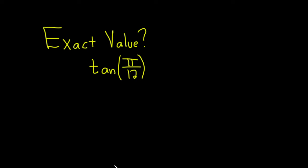In this problem we're going to find the exact value of the tangent of pi over 12. To do this, we're going to start by writing pi over 12 as either a sum or difference of two more familiar angles.